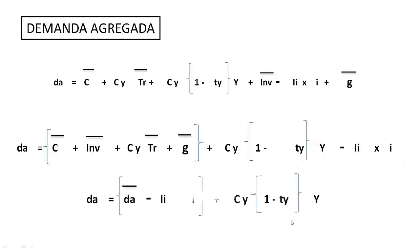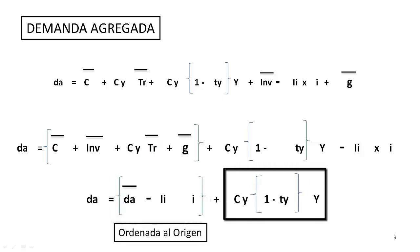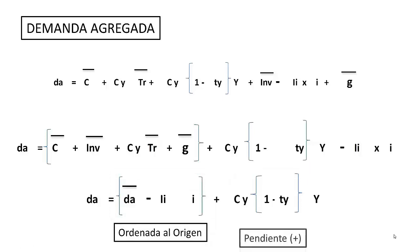Reagrupando, la demanda de bienes autónomos más la parte que depende del tipo de interés será la ordenada en el origen, que siempre es positiva. Quedando como segundo término la parte que depende de la renta, con pendiente también positiva pero menor que 1, pues la propensión marginal al consumo y la tasa de impuestos sobre la renta también son menores que 1.